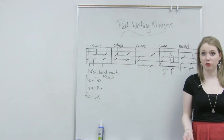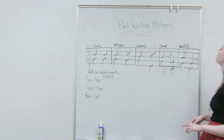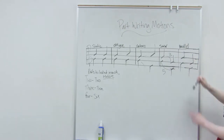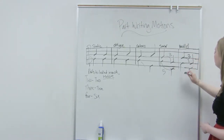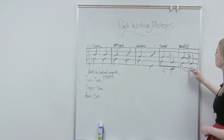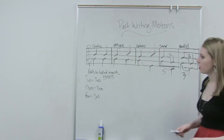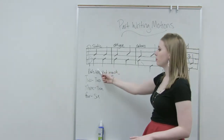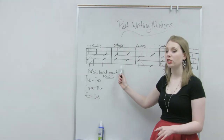Finally, we have parallel motion, which means that the parts move the same interval each and in the same direction. We have a G and a B, and the B moves down to the G which is a third, and the G moves down to an E which is also a third.